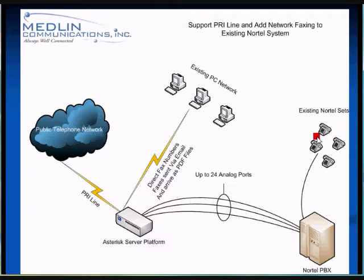From an outbound side, when your callers pick up a phone and press 9, the Nortel is going to swing over to the Asterisk, grab a line, and we're going to route that call right out to the network.